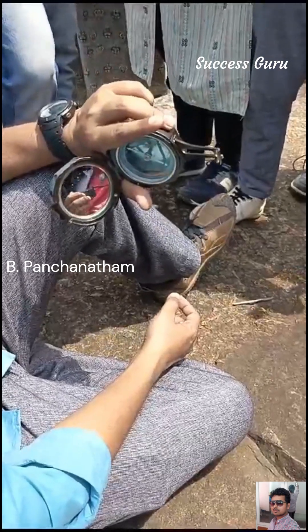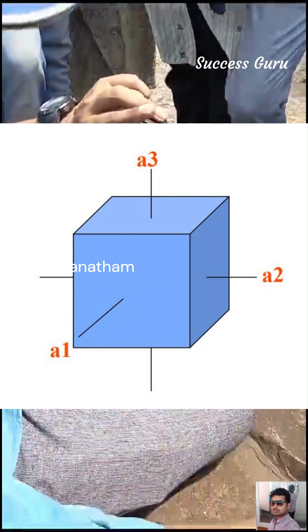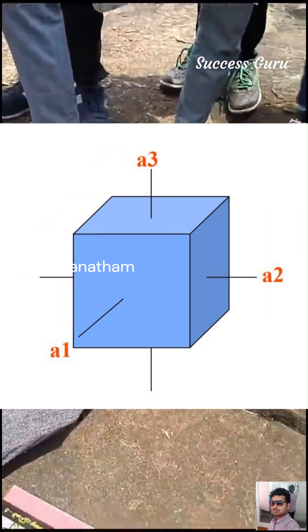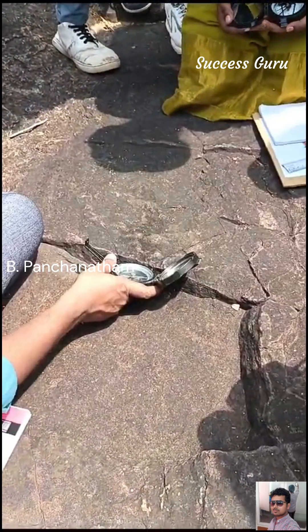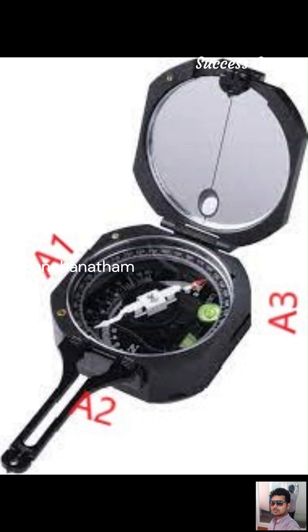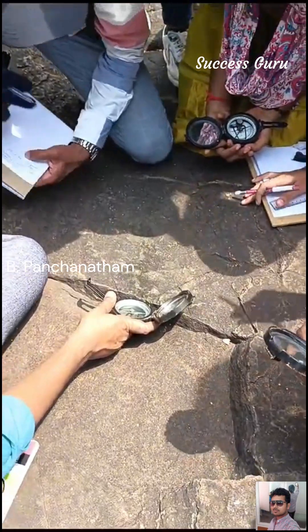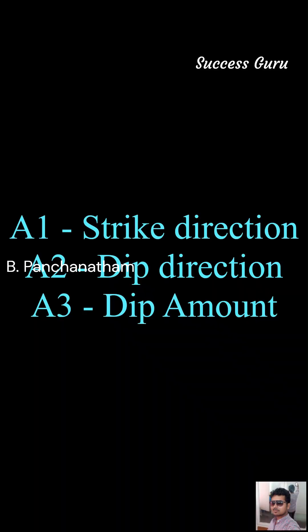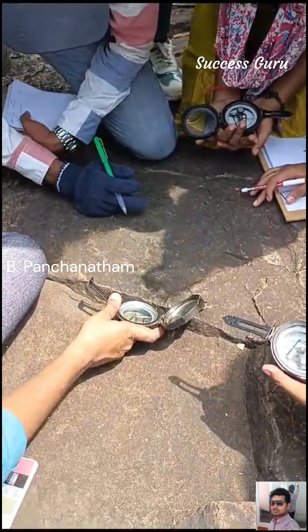There is a crystal mirror on the front and back. A1 axis runs front to back, A2 axis runs left to right, and A3 axis runs top to bottom. In the Brunton compass, A2 shows dip direction and A3 can be used to measure the dip amount.